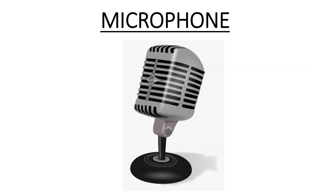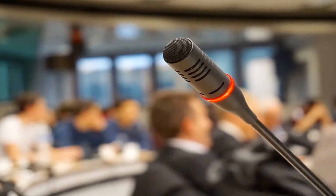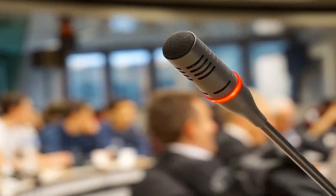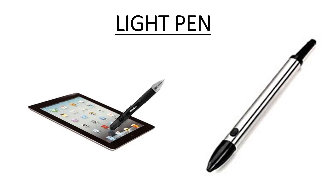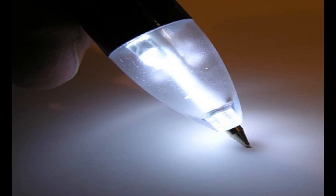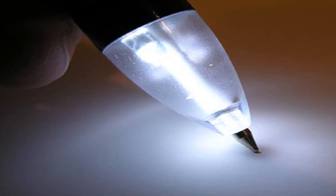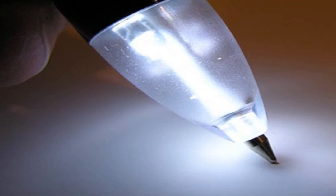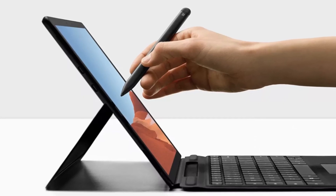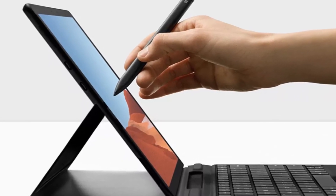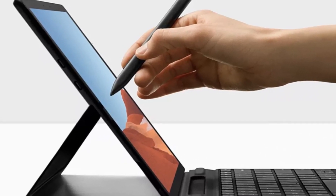Microphone. A microphone is used to record our voice and different sounds into a computer. It also helps us to chat with our friends through the internet. Light pen. A light pen allows the user to point to displayed objects on the computer screen. It is used to write or draw on the computer screen.